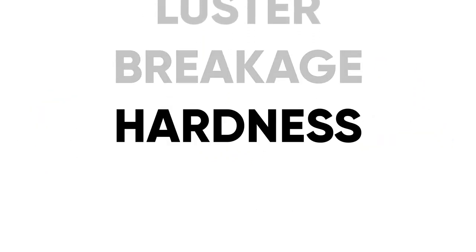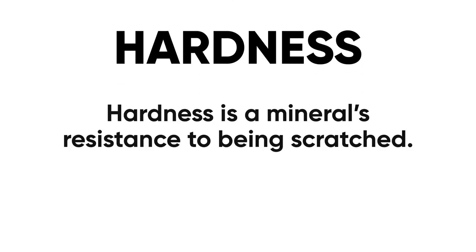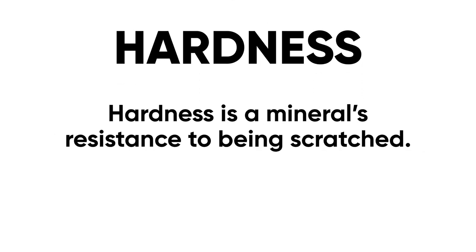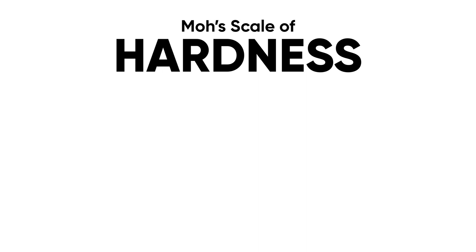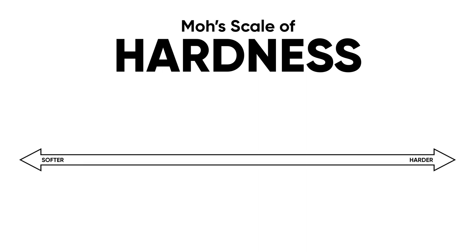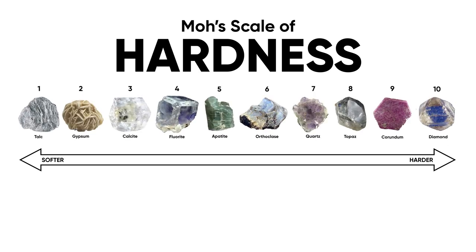Then we have hardness — exactly what you might think: how hard a mineral is, or in other words, how much the mineral will resist being scratched. To figure out hardness, we have a scale called the Mohs scale of hardness, which goes from 1 to 10, with 1 being soft and 10 being hard. Here you can see different minerals and where they fall on the Mohs scale. One of the softest minerals known to man is talc, which has a hardness of 1 — you can actually break it apart with your fingernail. Going up through gypsum, calcite,